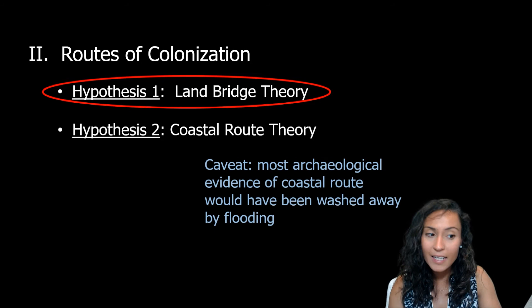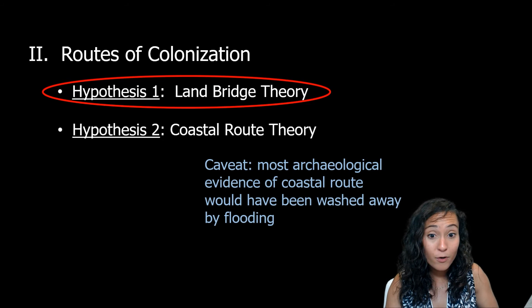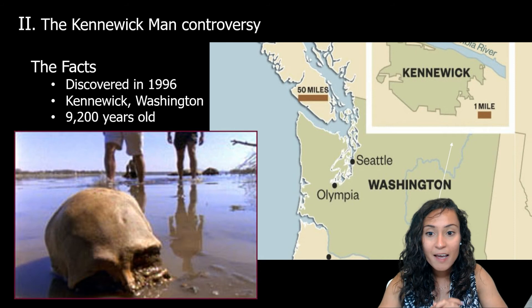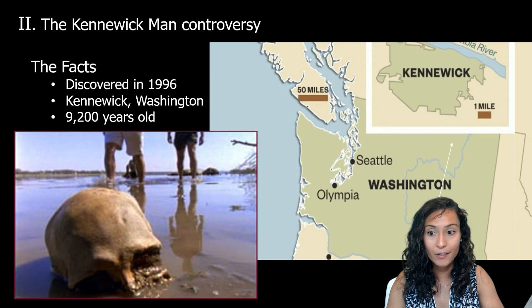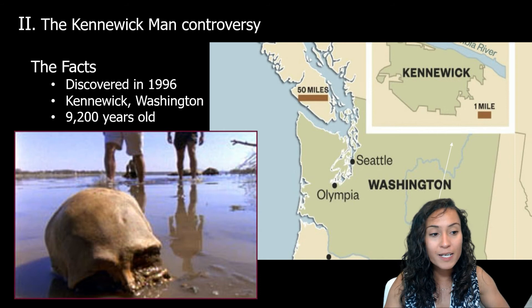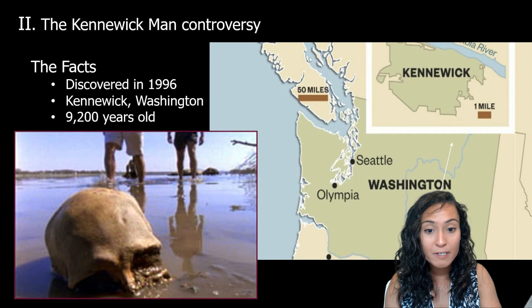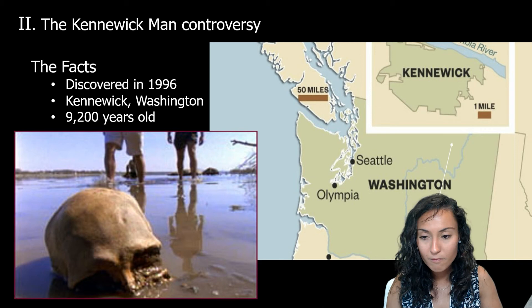It still remains unclear which of these routes people were taking to get to North and South America. The majority of scholars agree that the land bridge hypothesis is probably the most realistic, although there is definitely some evidence to the contrary. In your activity for this week, you'll be tasked with joining the debate surrounding the human remains referred to as Kennewick Man. I'll provide a brief background on the case in the remaining time in this lecture.